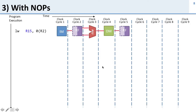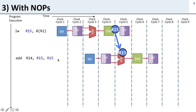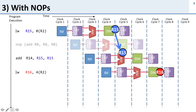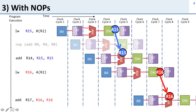Here's how it works: the first load word loads R15 and the results are available after the memory stage. The earliest we can get them to the ALU for the add is in the next cycle. So the best we can do is place the add instruction so its execute stage is the cycle after the memory stage of the load. To achieve that we need a no-op to shift it over by one cycle. The same logic applies to the second load word.